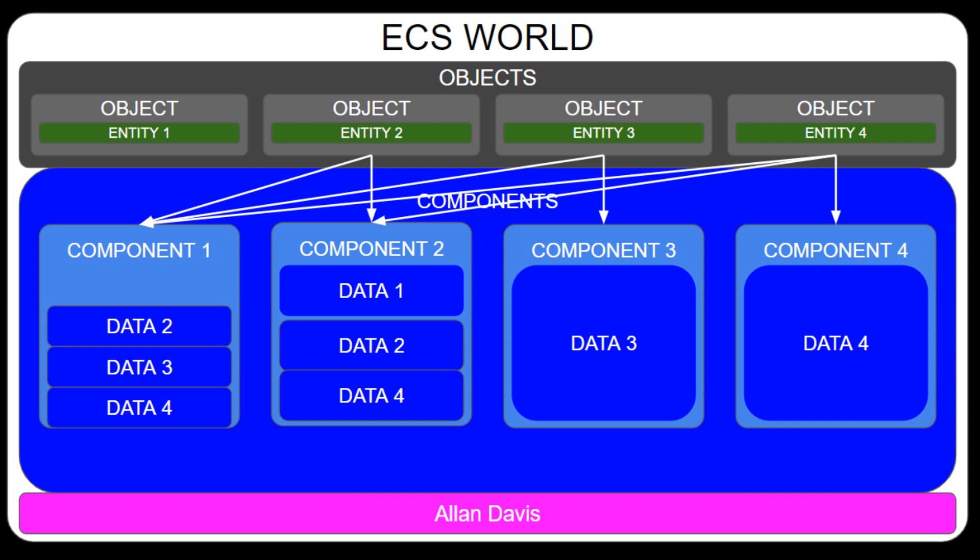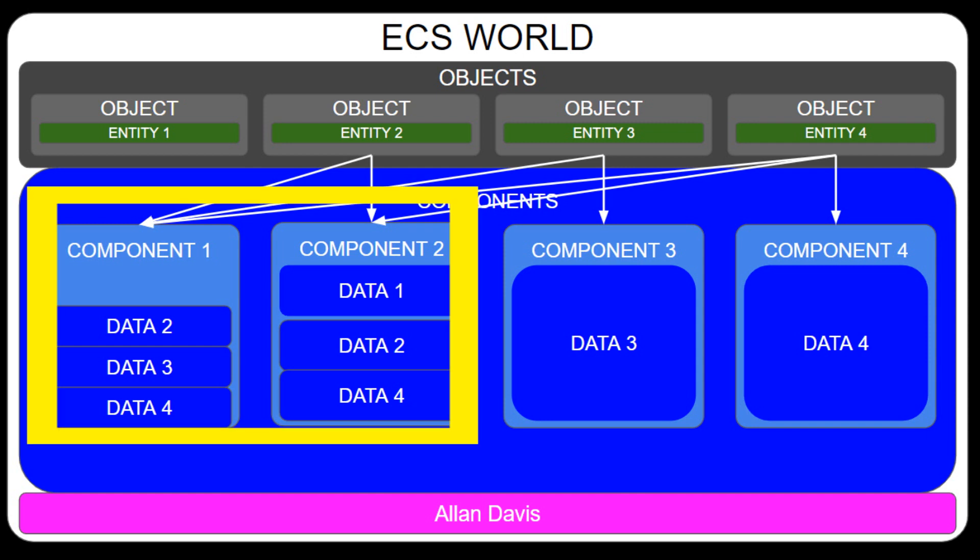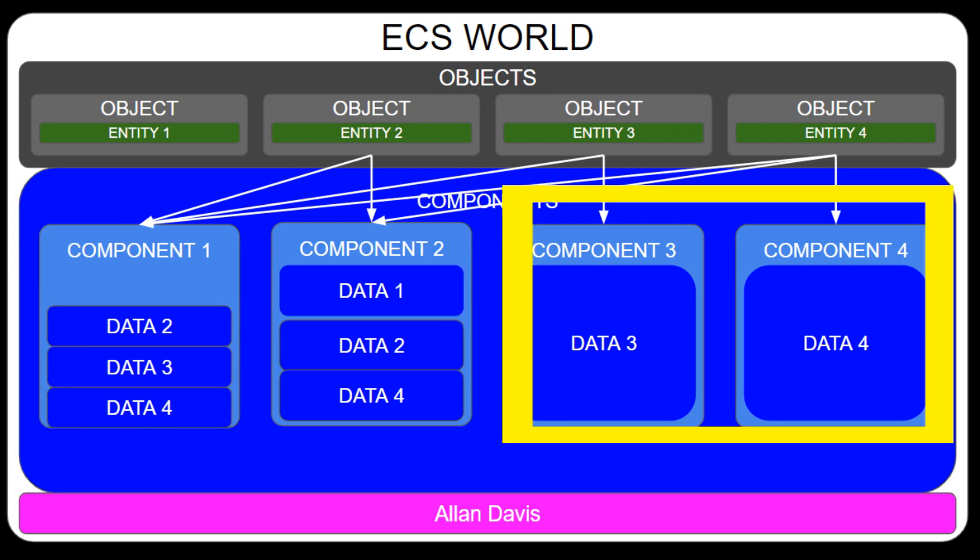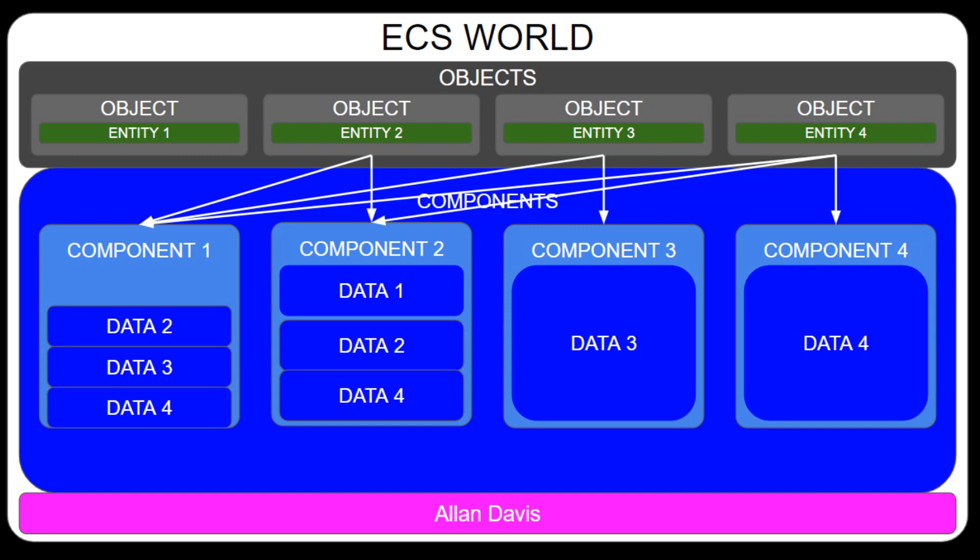This identifier can be thought of as an index into the given array of a component type. However, it's worth noting that this simplification doesn't always hold true. Some frameworks, such as Bevy, use different ways of storing components depending on whether they expect to be present on most or only a few entities, using tables versus sparse sets respectively. This added complexity can help reduce memory consumption in some cases.